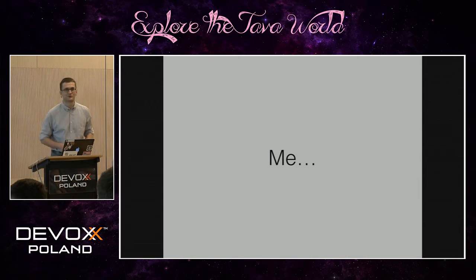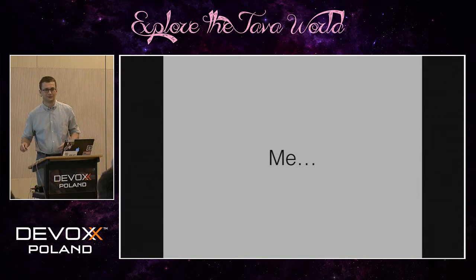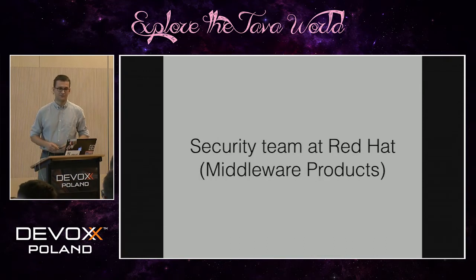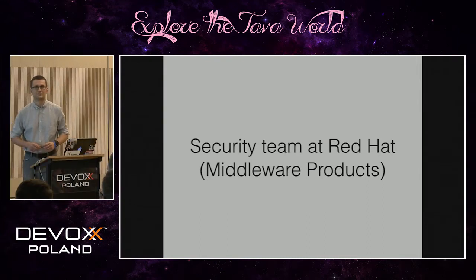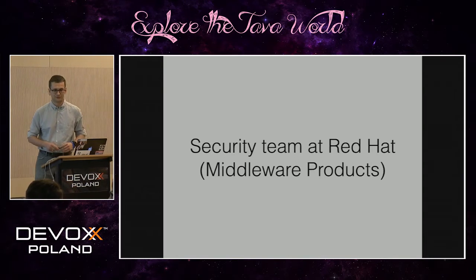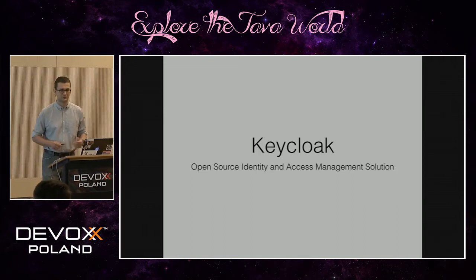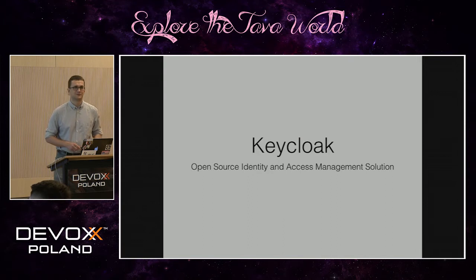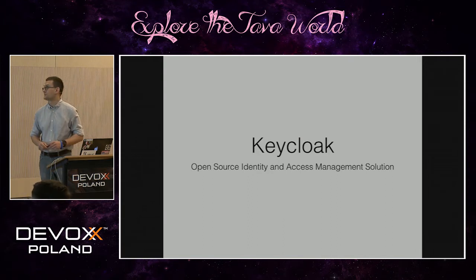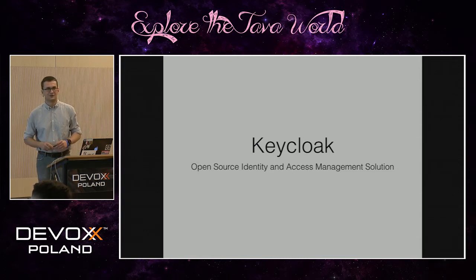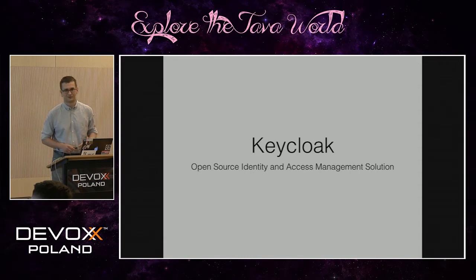My name is Buloslav Davidovich. I'm engineering manager and platform architect at Red Hat. I've been with Red Hat for over 10 years, actually 11 this year. Currently I'm in charge of the security team in middleware, the Java middleware part of Red Hat. One of the things my team is responsible for is the Keycloak project, which is an open source identity and access management solution. This is not a presentation about Keycloak — I will use it as an example, probably for around 7 or 8 minutes. So it's not a Keycloak marketing talk.